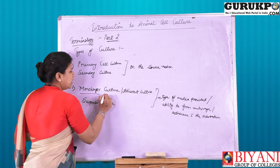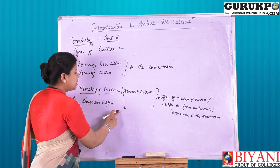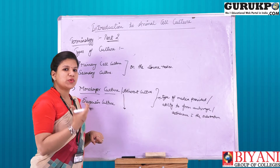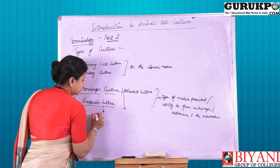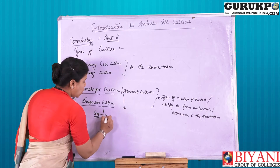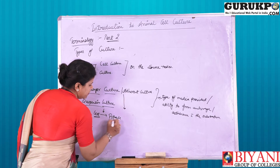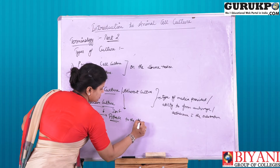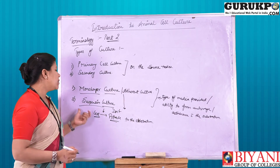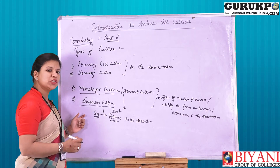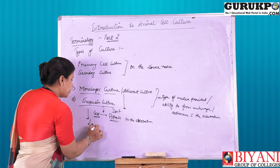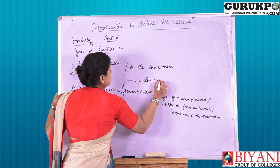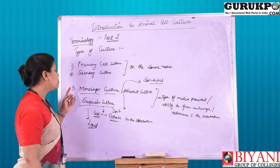Monolayer or adherent culture — as understood from the name itself — these cells have the ability to form attachment with the substratum provided. In suspension culture, the cells do not attach to the substratum; they are found in liquid media. For the growth of suspension culture we provide liquid media, and for monolayer culture we provide solidified media. This is the variation between monolayer and suspension culture.